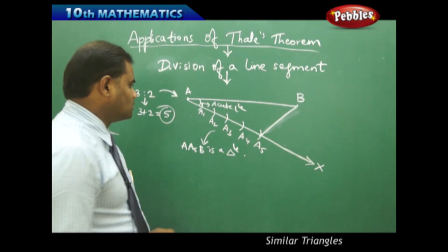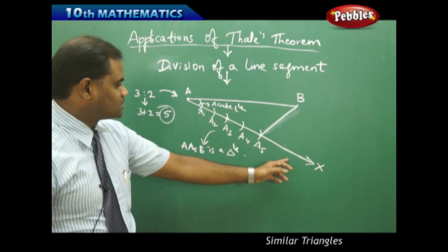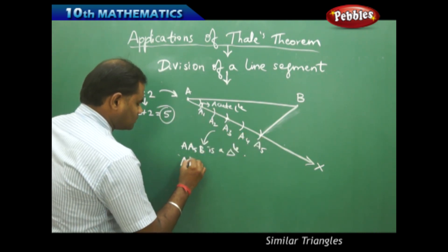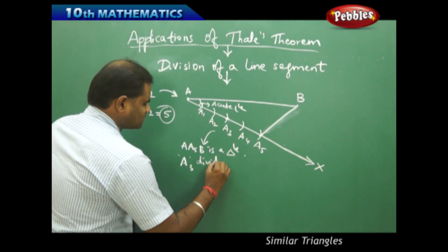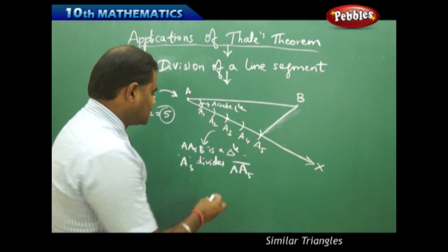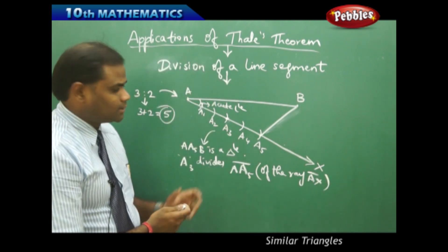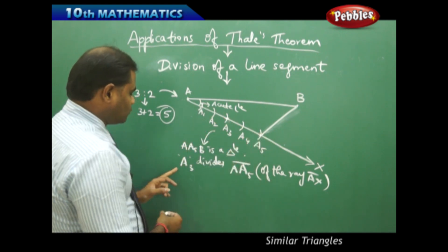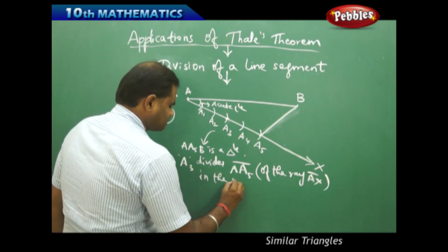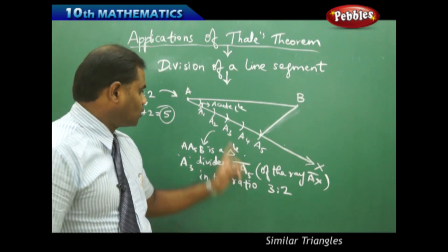Initially I identify the third part — counting 1, 2, 3 — so A3 is the point where the ray AX gets divided into the ratio 3:2. Because A3 divides the segment A-A5 on the ray AX in the ratio 3:2 — 3 parts on one side and 2 parts on the other. Therefore A3 divides the line segment A-A5 in the ratio 3:2.